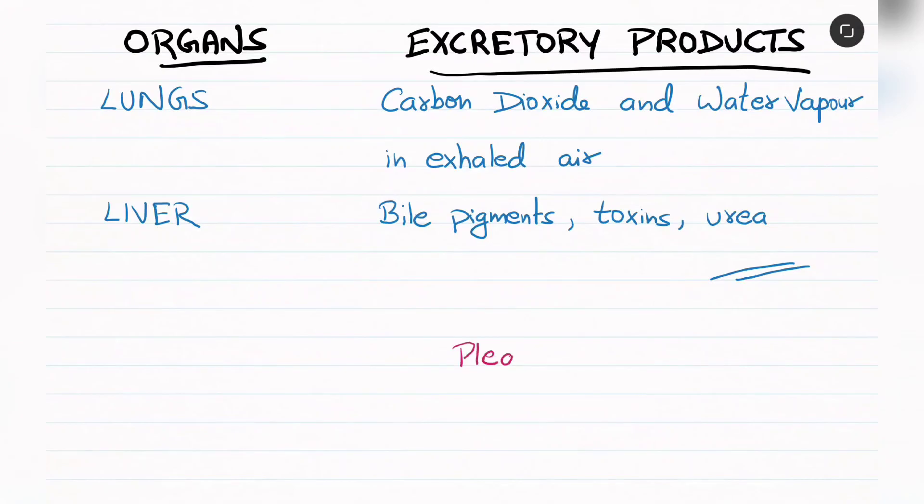The next organ is the liver. The liver excretes toxins and urea.